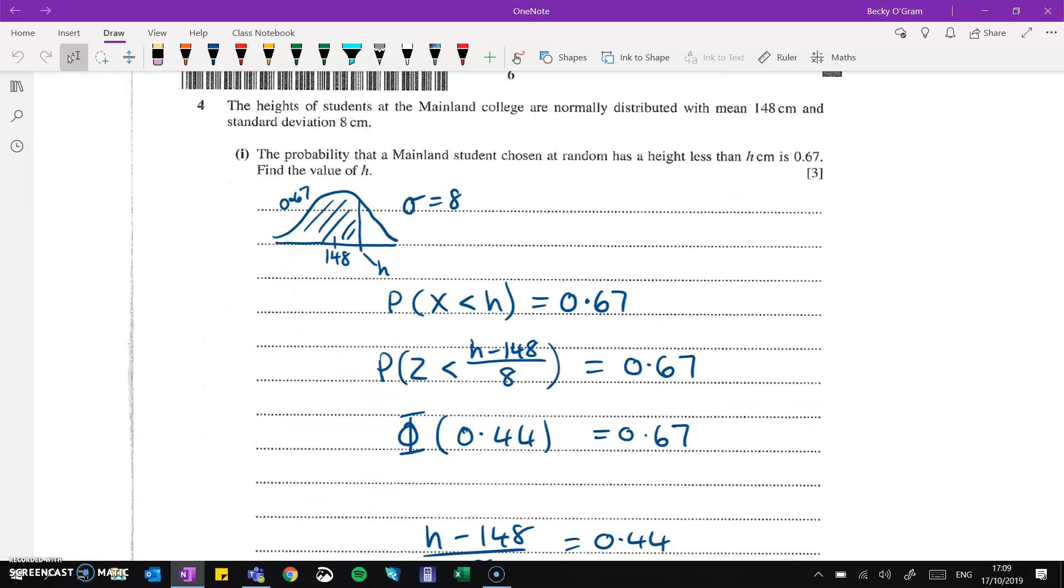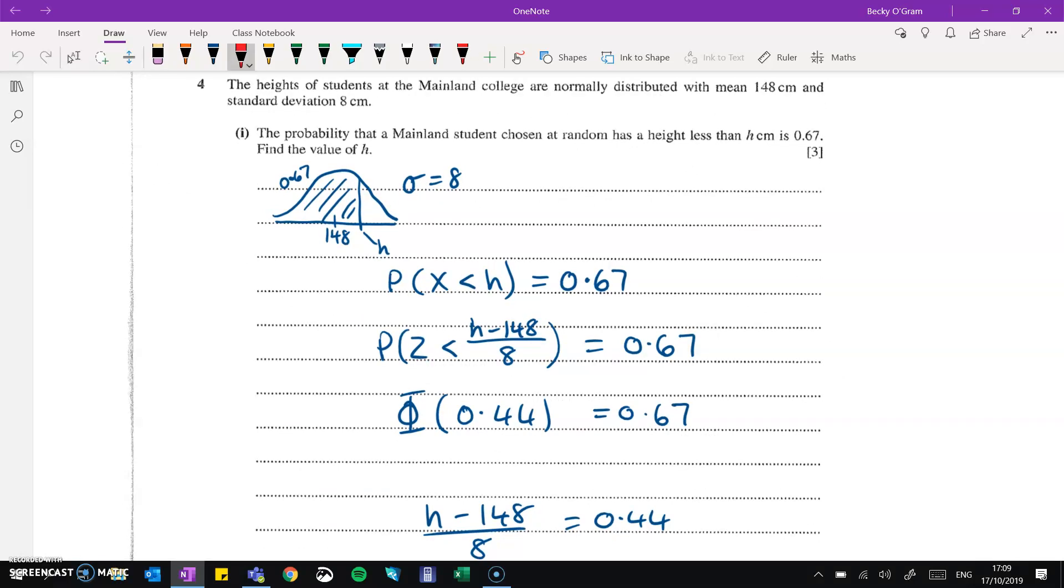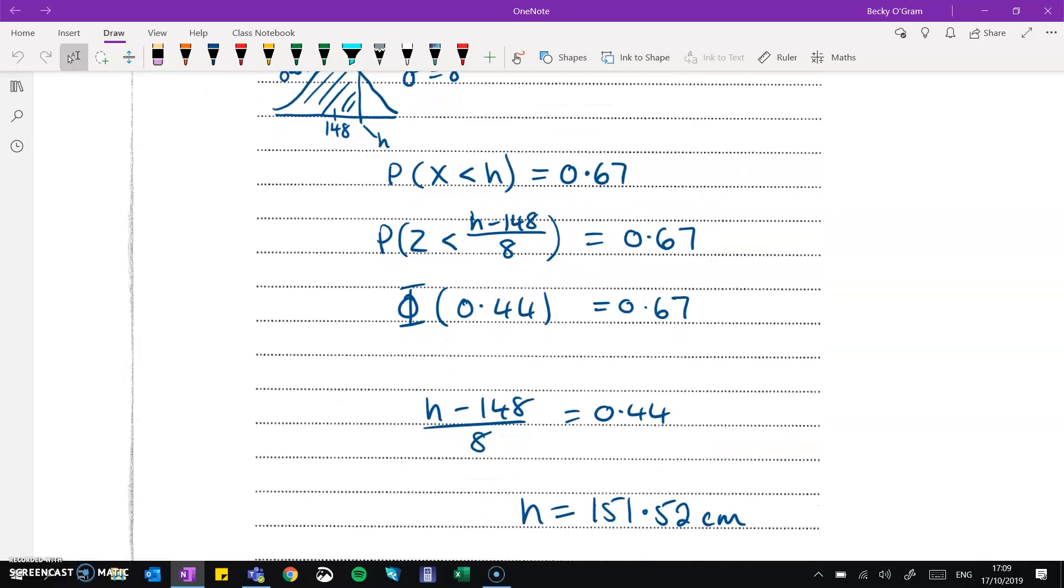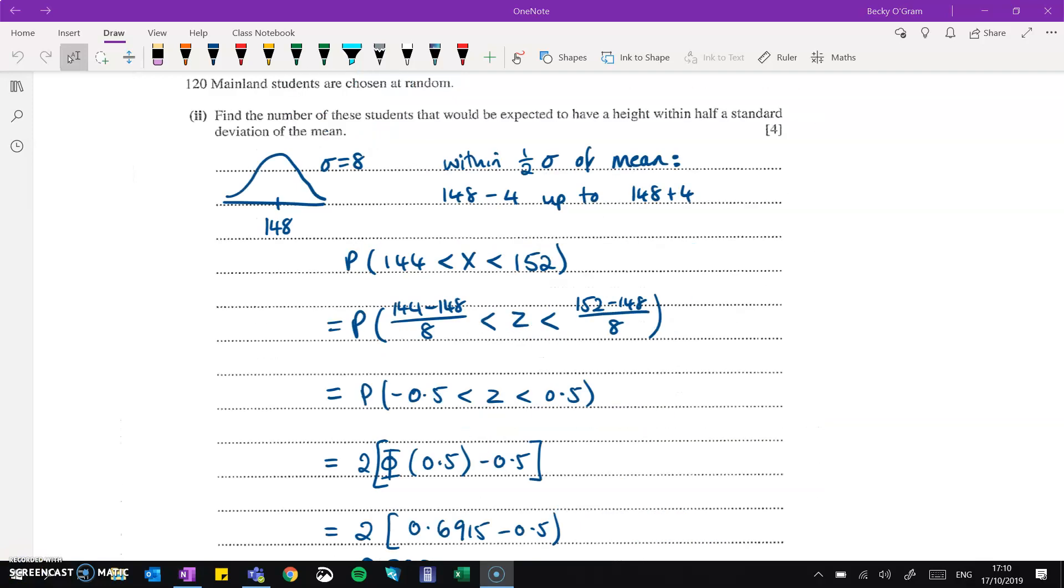For question four, we have a normal distribution. We've got mainland college normally distributed details of that distribution. We're told that the probability of being less than a certain height is 0.67. So I've put this into a diagram. Probability that X is less than that height is 0.67. So then you work through that normal distribution calculation, turn it into Z, work out what phi would need to be, what value gives 0.67. Set equation of H minus 148 over 8 equal to that value. Work it through to get H is 151.52.